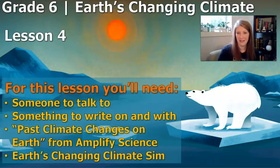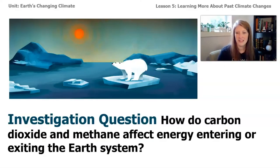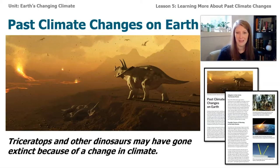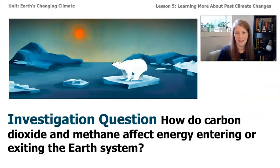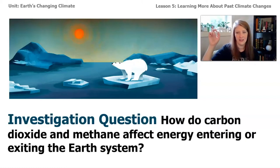Where we left off at the end of lesson four is that we came to an understanding that Earth's current climate is changing, but there have been times in Earth's history when the climate has also changed. Before we jump too far in, I want to talk about the investigation question for today: how do carbon dioxide and methane affect energy entering and exiting Earth's system?